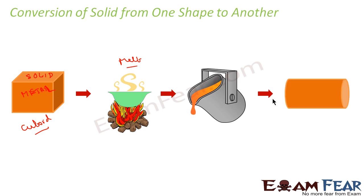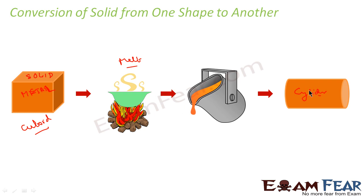Then we give it another shape — for example, in this case this is a cylinder. Or we can do it the other way around also: from a cylinder we can make a cuboid. In real life, we keep changing the shapes of solids from one shape to another, because the iron bar that we get from raw material is in one form, and from this we make steel plates and cylindrical pipes.